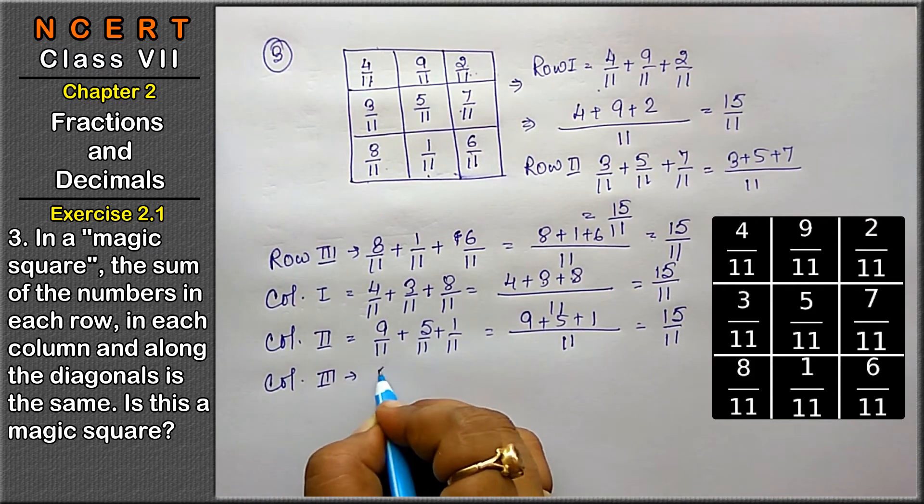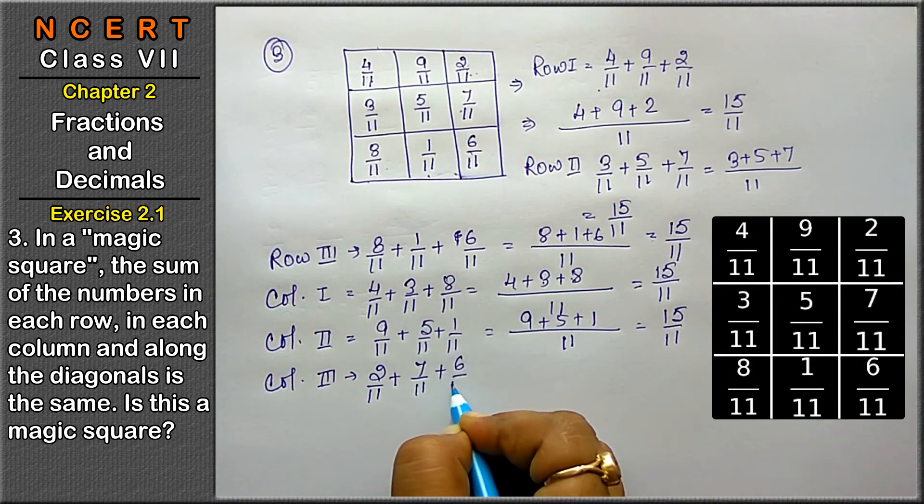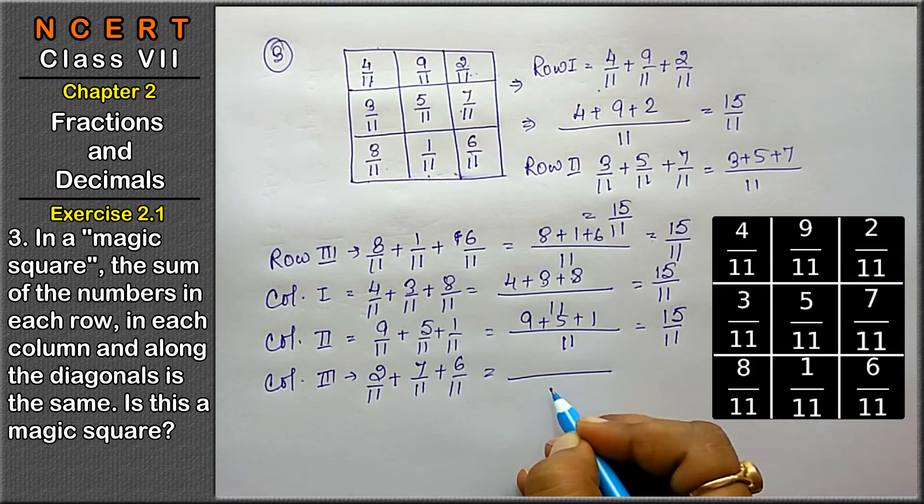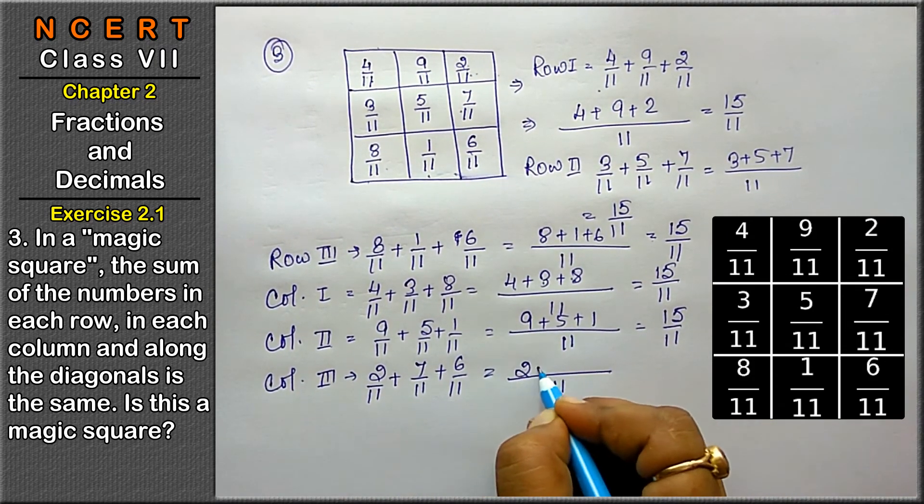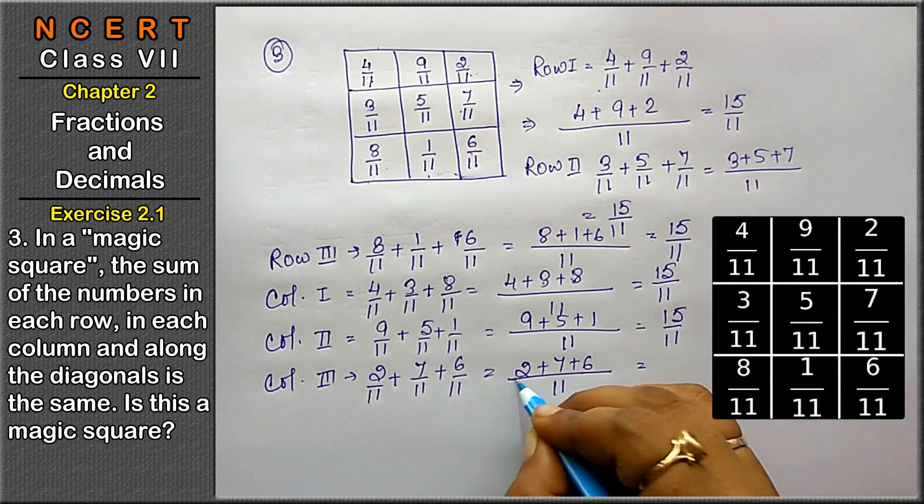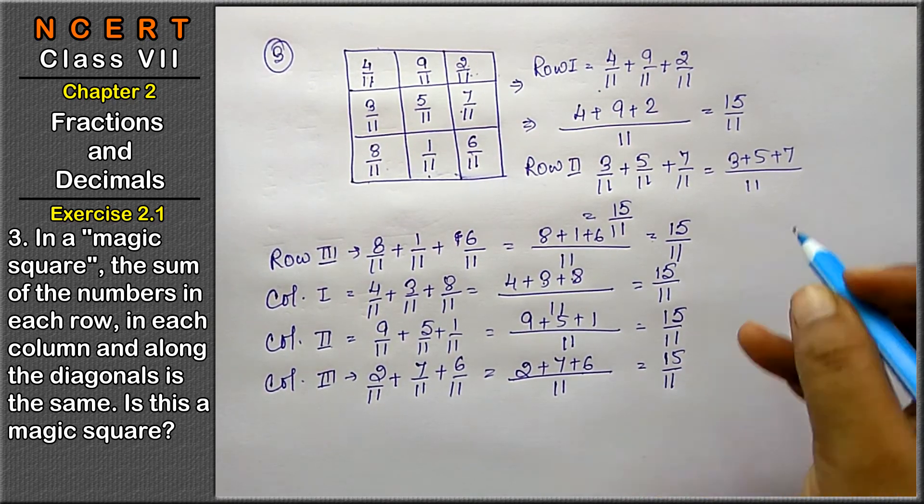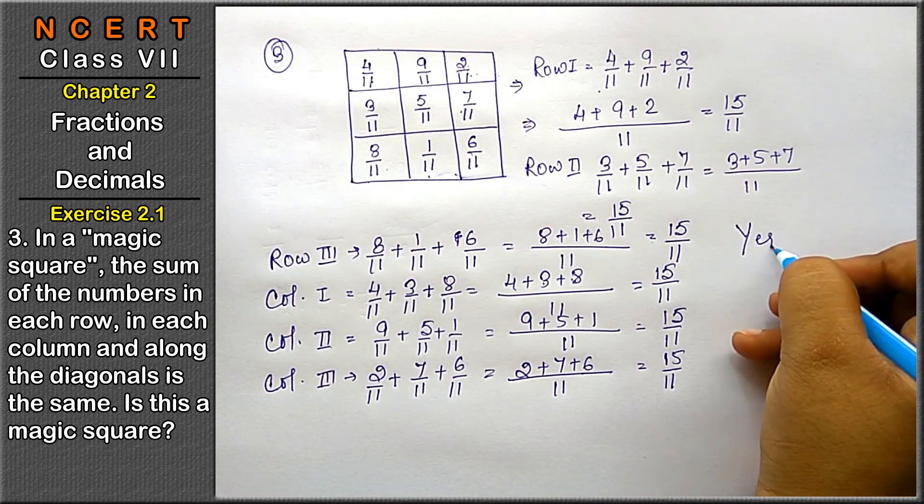Column third is 2 upon 11 plus 7 upon 11 plus 6 upon 11. Let's take the LCM. 2 plus 7 plus 6, that is 6 plus 2 is 8, 8 plus 7 is 15 upon 11. That means it is a magical square. Yes will be the answer.